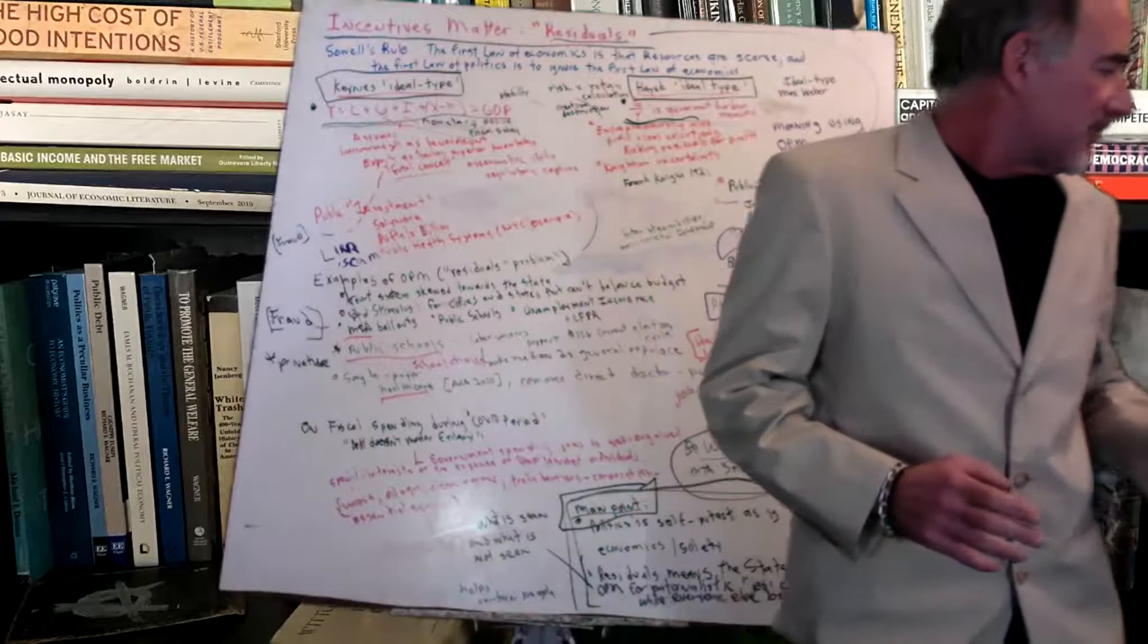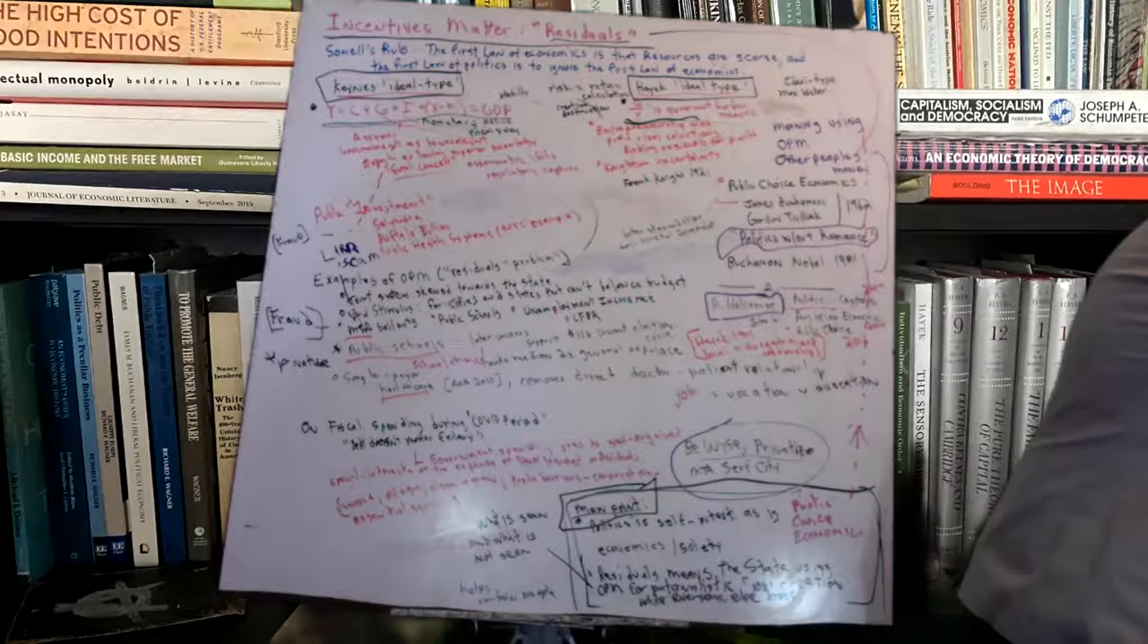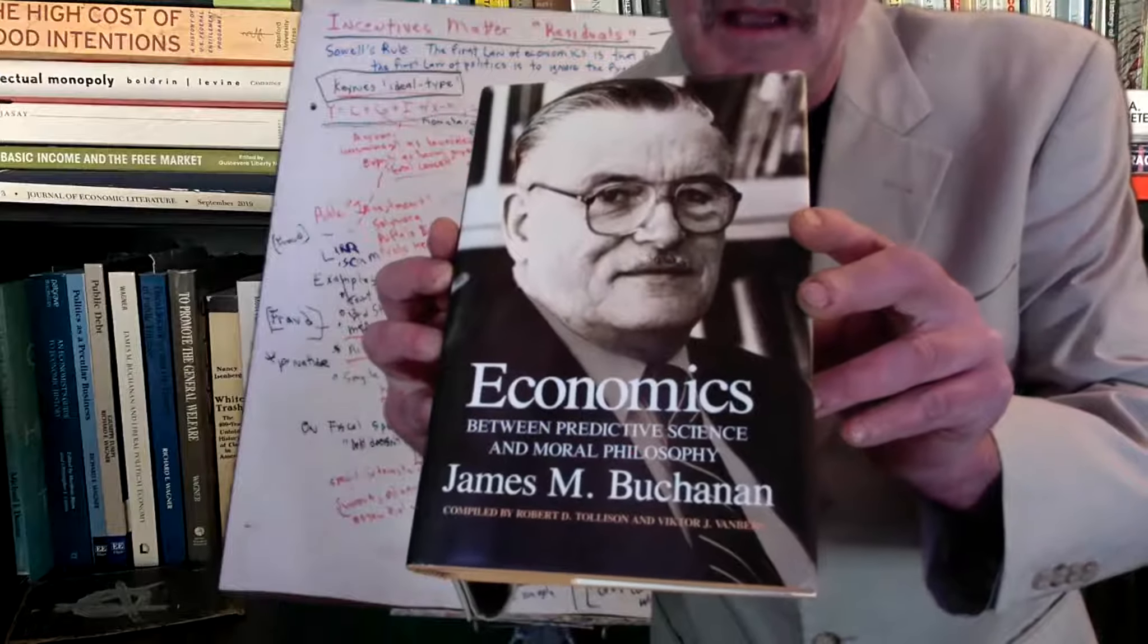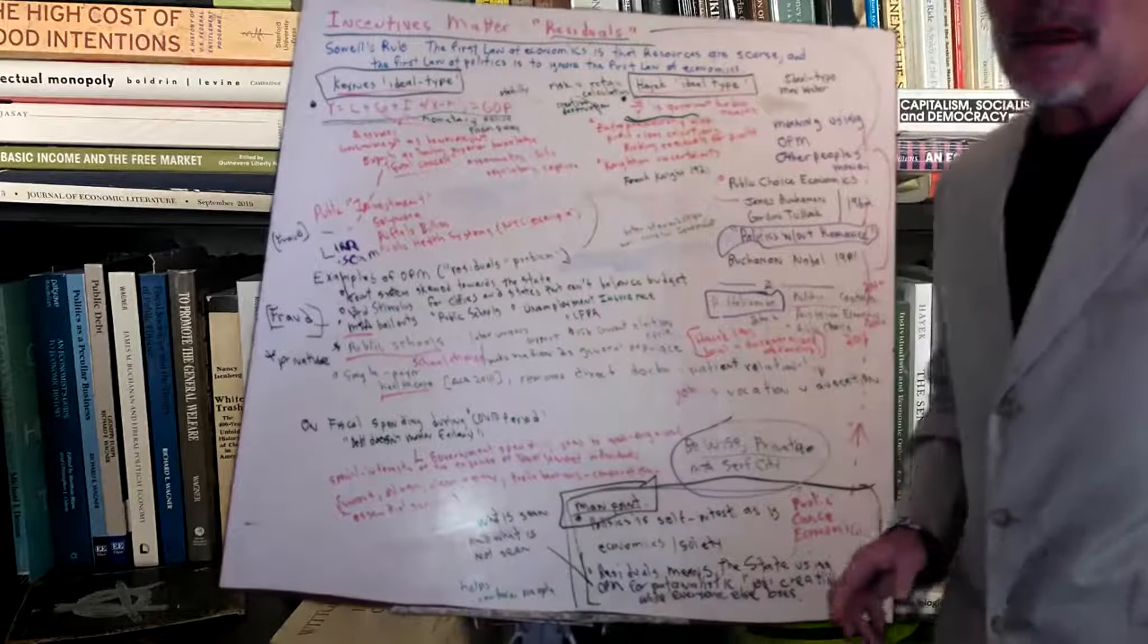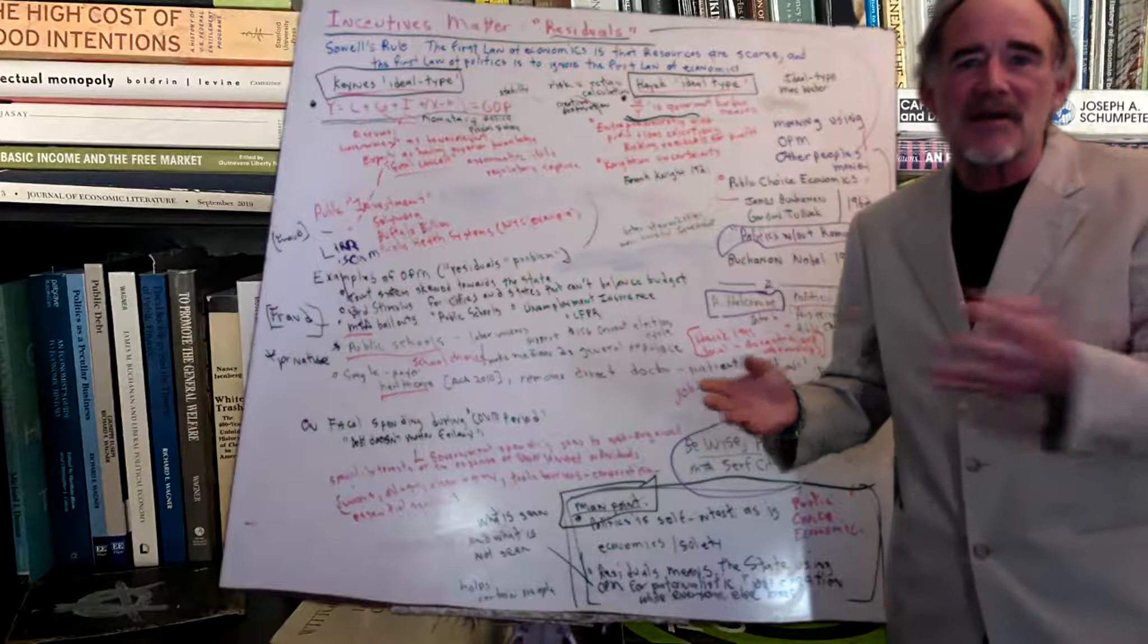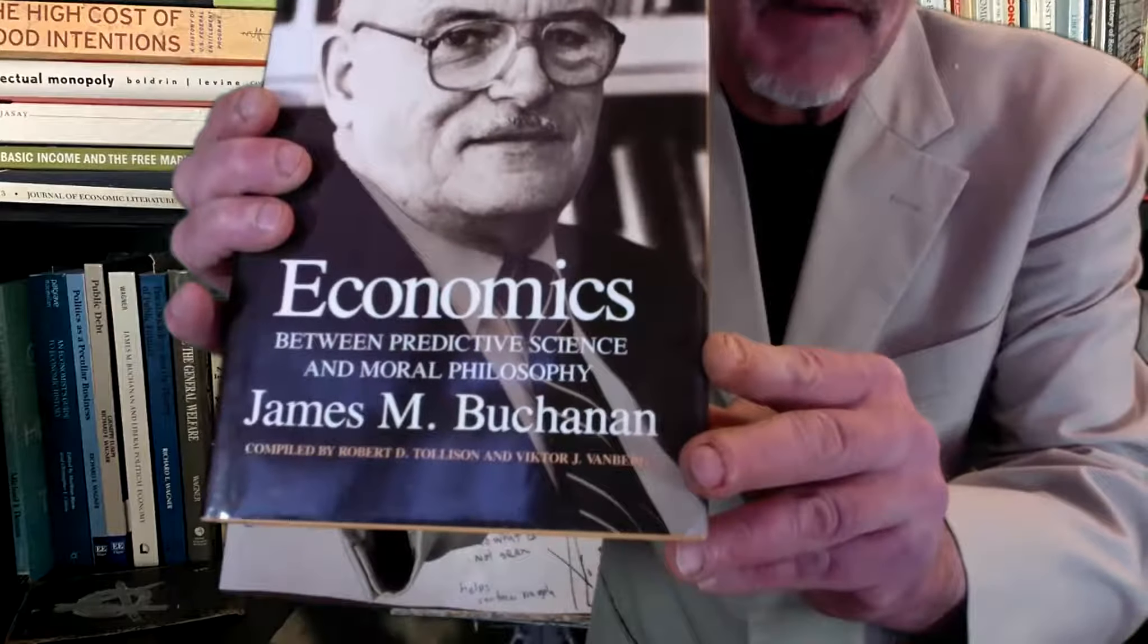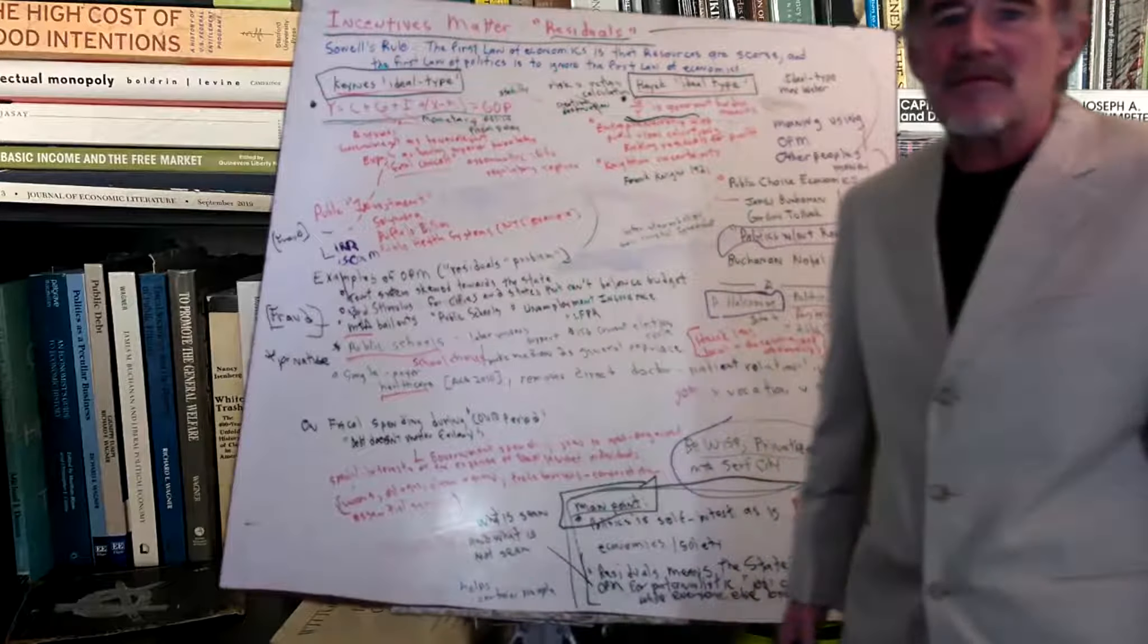And so when you're using other people's money, you're not as careful with the investments. This idea of residuals comes from public choice economics. This is James Buchanan. He won the Nobel prize in 1986 for public choice economics.